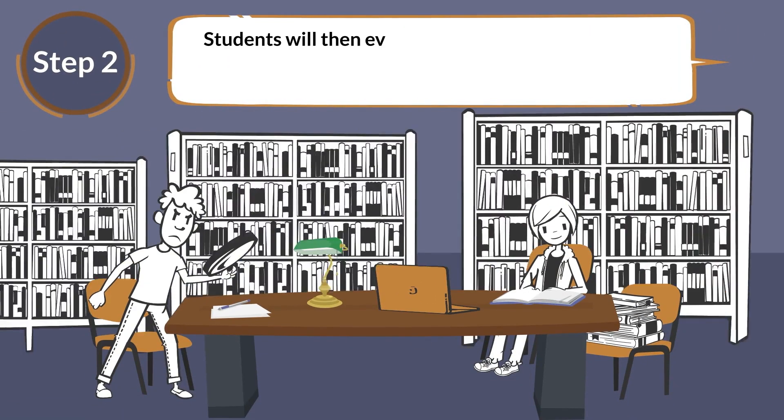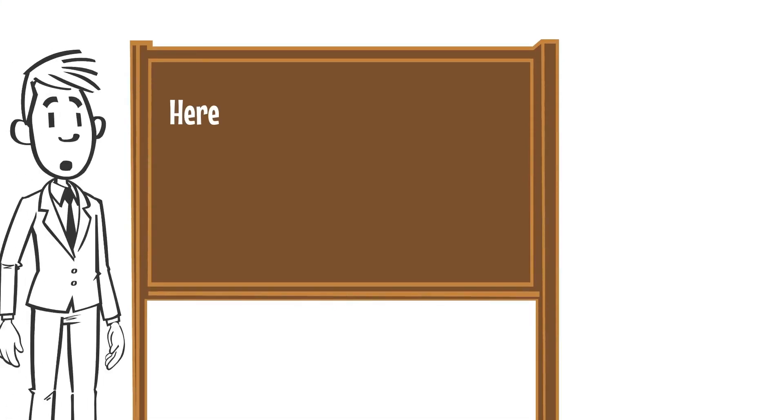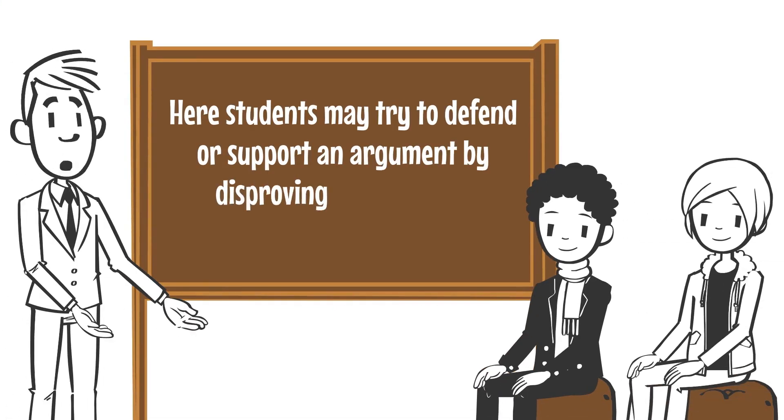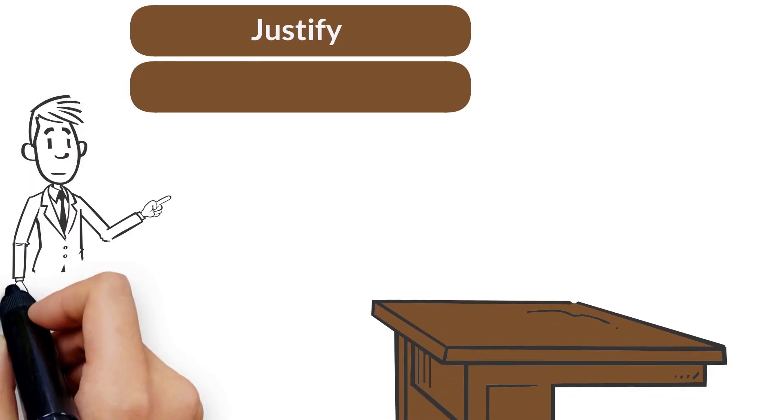Step two: Students will then evaluate their analysis and draw conclusions from it. These conclusions will be grounded in reasoning and evidence. Here students may try to defend or support an argument by disproving or validating statements. Students may justify, rank,